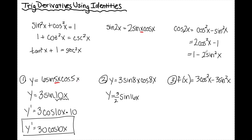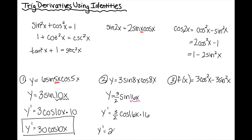Now when I take the derivative, I'm using chain rule where sine is the outside and 16x is the inside. So y prime is 3 halves; derivative of sine is cosine; I leave the 16x alone and multiply by the derivative of 16x, which is 16. Doing 3 halves times 16: 16 divided by 2 is 8 times 3 is 24. So I have 24 cosine of 16x.